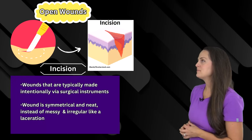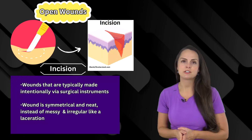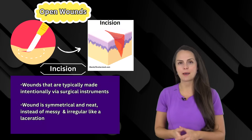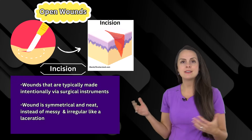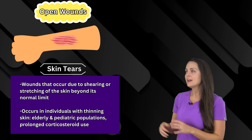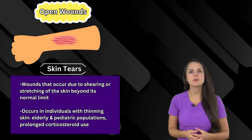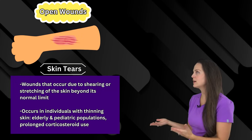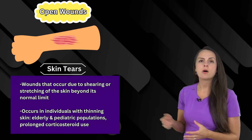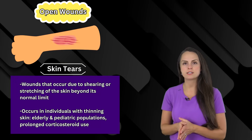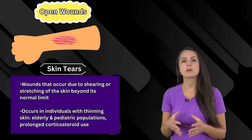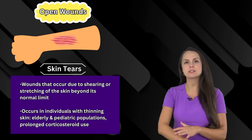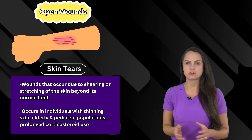Then we have incision. This may seem similar to a laceration, but it was in most cases intentionally created via a surgical instrument like a scalpel, so its appearance is going to be symmetrical and neat compared to a laceration. Next are skin tears — a type of skin wound that occurs because of shearing or stretching of the skin beyond its limit, leading to tears or flaps. This can occur in patients with thinning or fragile skin, such as those using corticosteroids long-term, elderly patients who have lost subcutaneous fat and collagen, or the pediatric population.